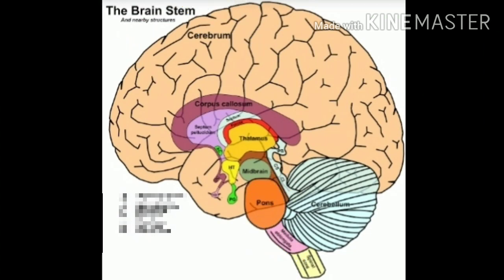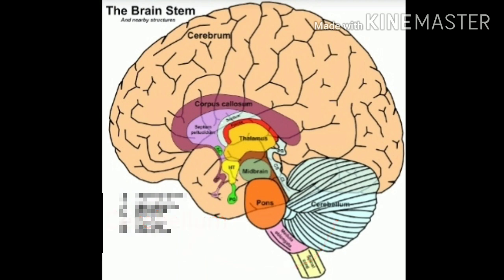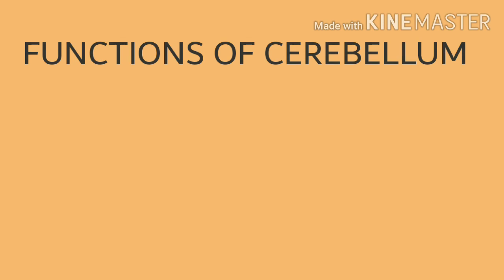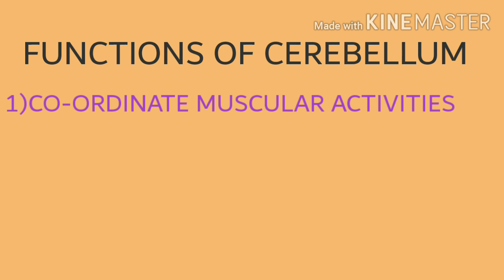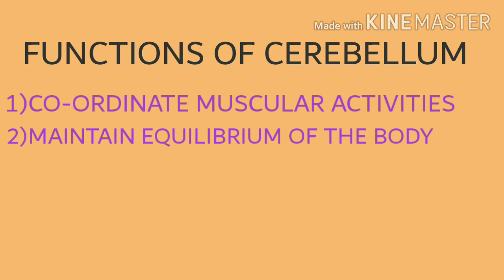Which is the second largest part of the brain? Cerebellum. Where is it situated? It is seen behind the cerebrum. The cerebellum has two functions: first, coordinate muscular activities; second, maintain equilibrium of the body, that means balance of the body.